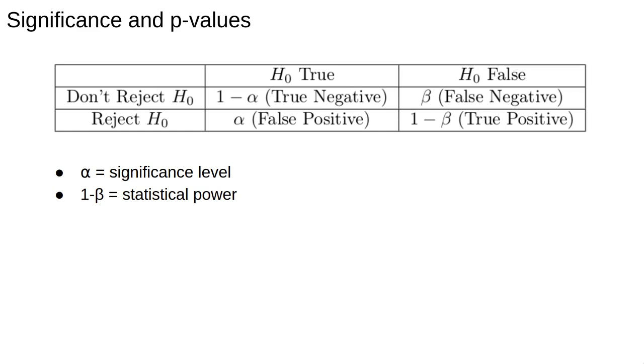Alpha is the significance level we discussed before. The lower alpha, the smaller the probability of a false positive. Beta is the false positive rate, which is generally not possible to calculate, and the quantity 1 minus beta is known as the statistical power.